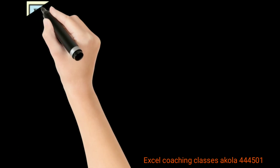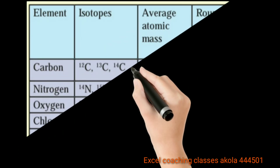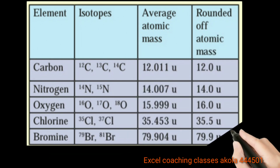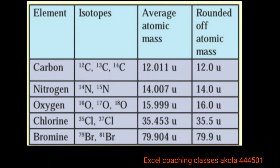The average atomic mass is given in the topic for various elements. For carbon — the isotopes 12, 13, and 14 — the average atomic mass is given. Similarly, nitrogen-14, oxygen-16, and chlorine-35.5 represent the average atomic mass of three isotopes.